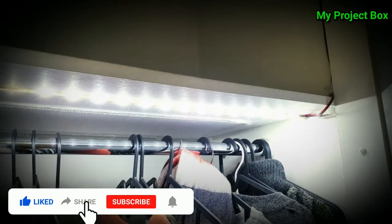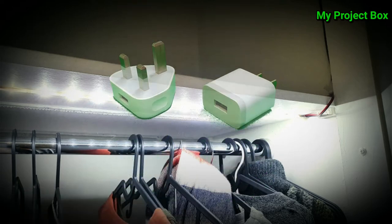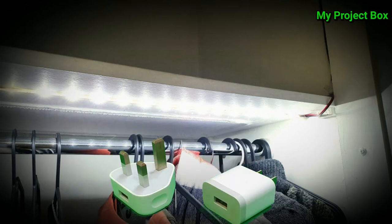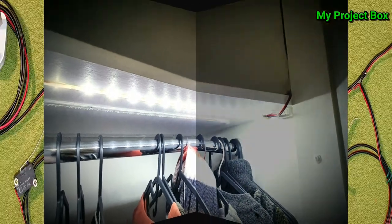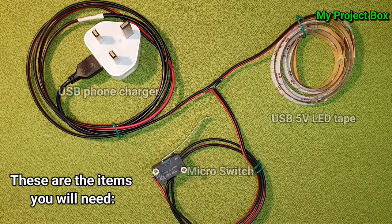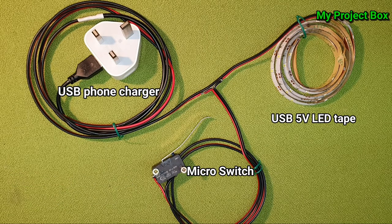I thought this time around I'd do a project that doesn't involve mains voltage. Since we all have USB phone chargers, we always have a spare one from an old phone. It's USB, so it's 5 volts and safe for everybody to work on - a simple USB powered automatic wardrobe light.